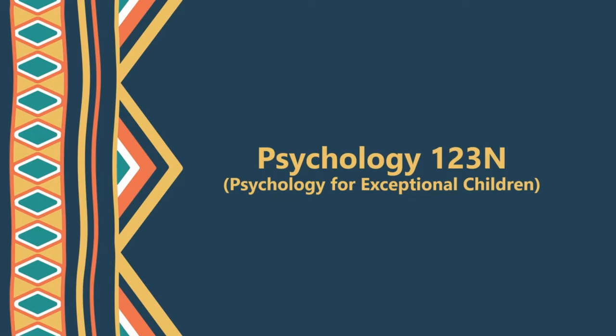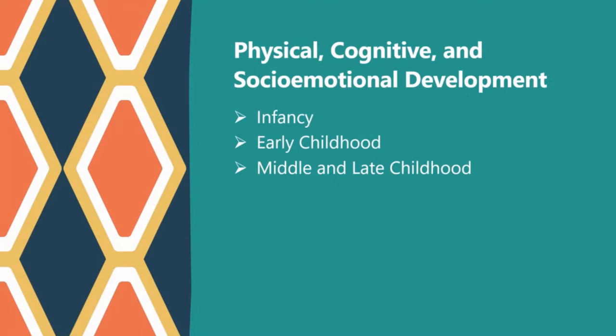Good day. This discussion video is intended for Psychology 123N, or Psychology for Exceptional Children. As psychology students, it is essential to know the different milestones that a certain age group should have achieved in terms of their physical, cognitive, and socio-emotional development. I have already given you the concept notes on this, and I believe that you also have prior knowledge from your developmental psychology subject.